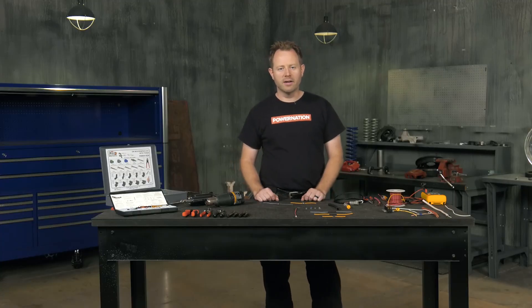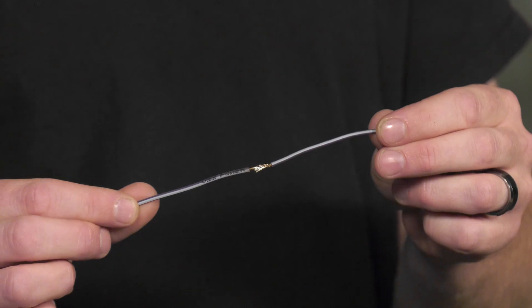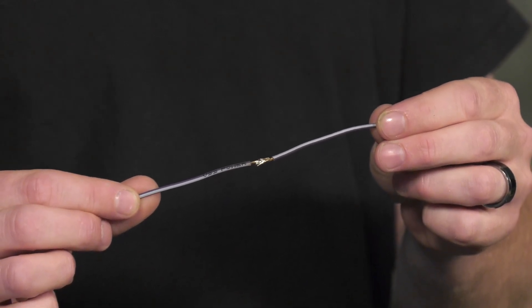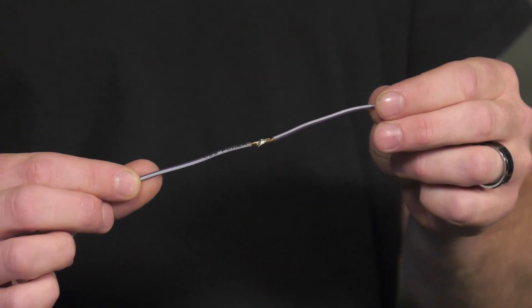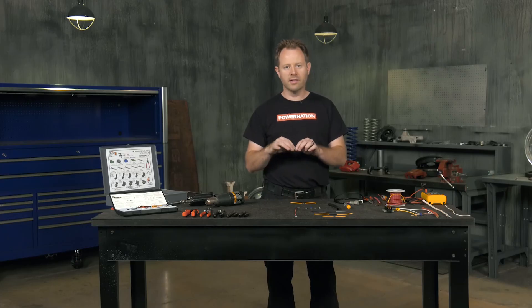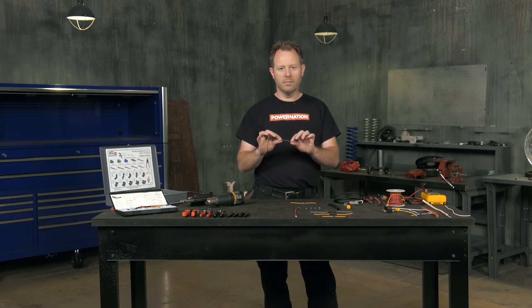So the first thing we're going to talk about is your wiring connections, crimping versus soldering. Now what is soldering? Well, soldering is when you take two pieces of wire, we strip them back and we're going to heat up the wires themselves and introduce some solder. As it melts, it binds the two together and holds once it hardens. Now that makes a good connection, but it's a very solid connection and very firm.